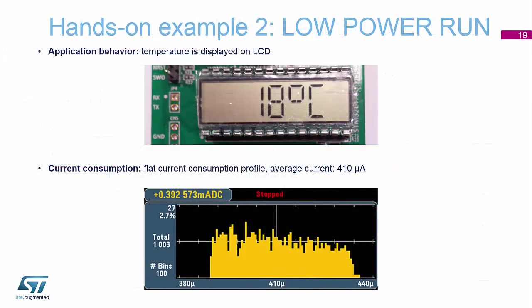What we should see on the display is the current temperature — hopefully around 20 degrees given how warm it is in here. If we used a current consumption profiling tool, you would see a profile similar to the example shown, and we should hopefully get an average current of about 410 microamps on the ammeter.